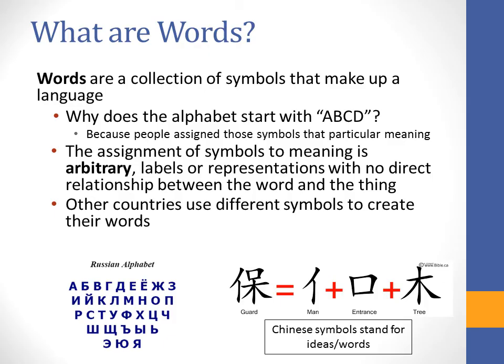We're going to start off with the most basic element of verbal communication, which is words. Words are a collection of symbols that make up a language. In reference to the English alphabet, we have the conventional A, B, C, D. And why does it start like that? It's because people assign those symbols a particular meaning, and that meaning is completely arbitrary.